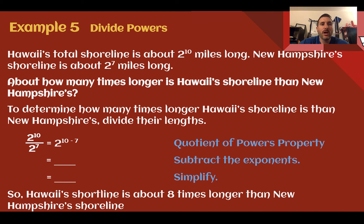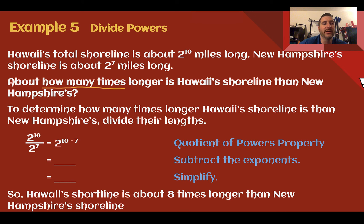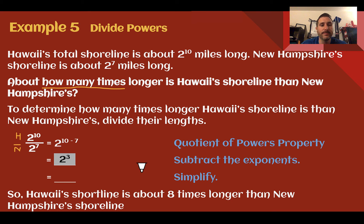Example 5: Divide powers. Hawaii's total shoreline is about 2 to the 10th miles long. New Hampshire's shoreline is about 2 to the 7th miles long. About how many times longer is Hawaii's shoreline than New Hampshire's? 'How many times' implies division. So divide Hawaii's by New Hampshire's: 2 to the 10th divided by 2 to the 7th. Same base — subtract exponents: 10 minus 7 gives us 2 to the third power. 2 cubed is 2 times 2 times 2, which is 8. So Hawaii's shoreline is about 8 times longer than New Hampshire's.